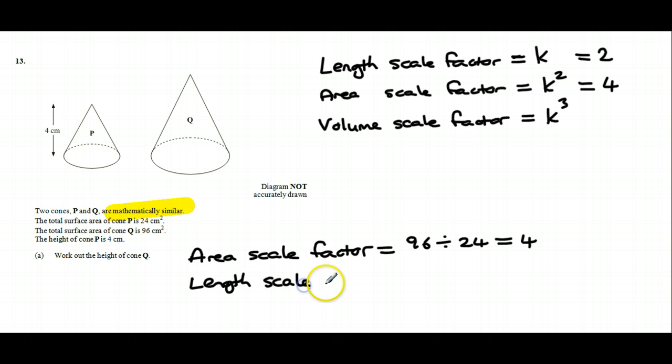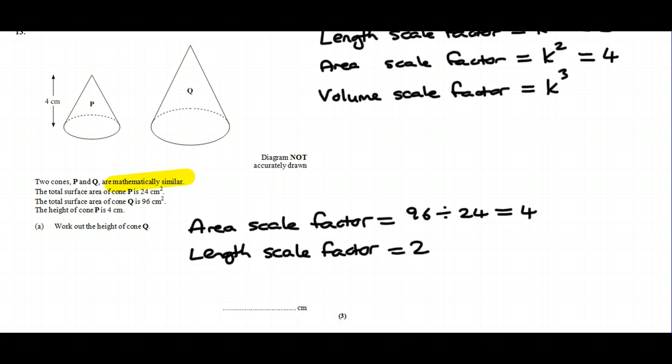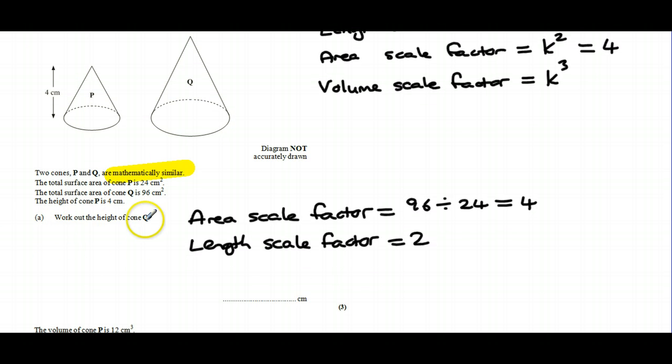So if the area is 4 times bigger, the lengths are all going to be 2 times bigger, which allows us in this question to work out the height of cone Q. The height of cone P is 4 centimeters and we need to times up by the length scale factor which is 2, which tells us that it's 8 centimeters high.